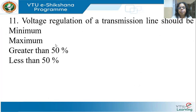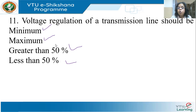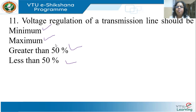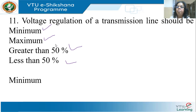Voltage regulation of a transmission line should be: minimum, maximum, greater than 50%, or less than 50%? If voltage regulation is large, it means a huge drop in voltage along the line, which is not good. Whether it's a machine, generator, transformer, transmission line, or cable — the regulation should always be minimum.